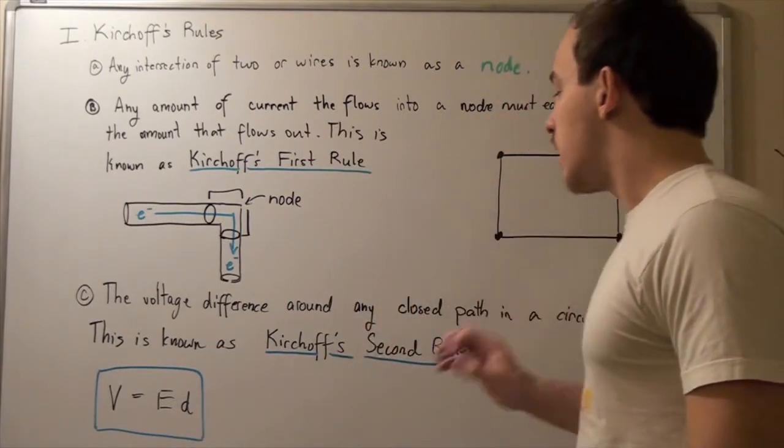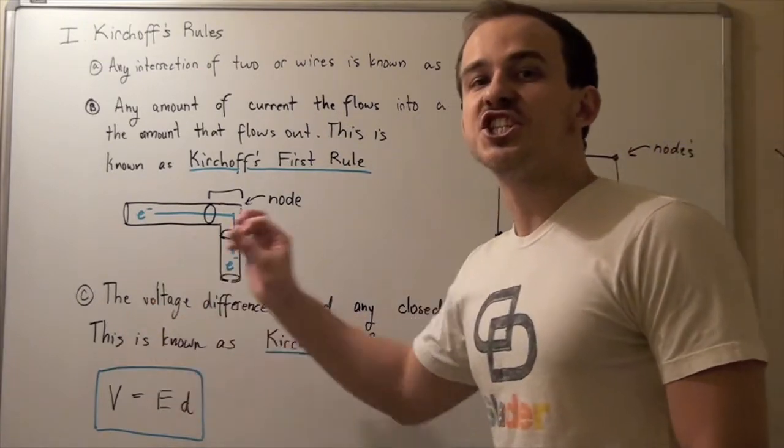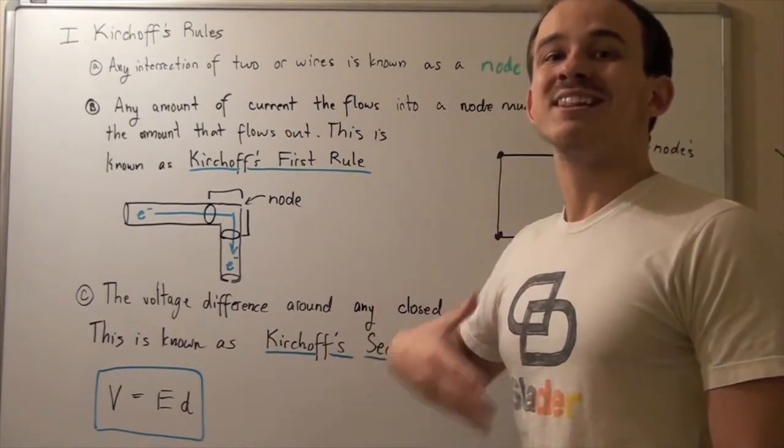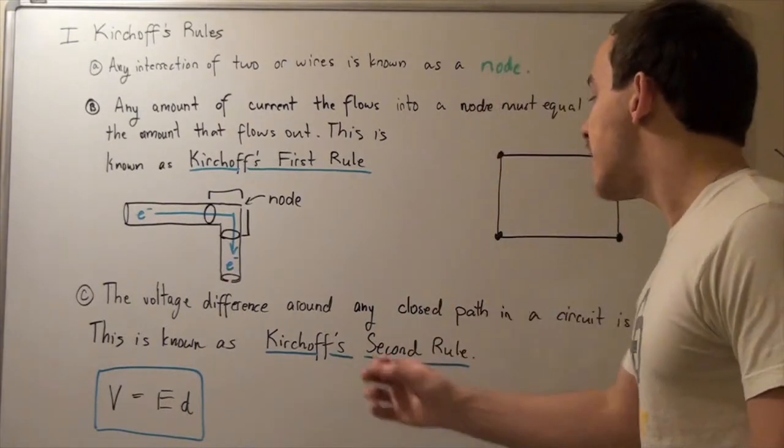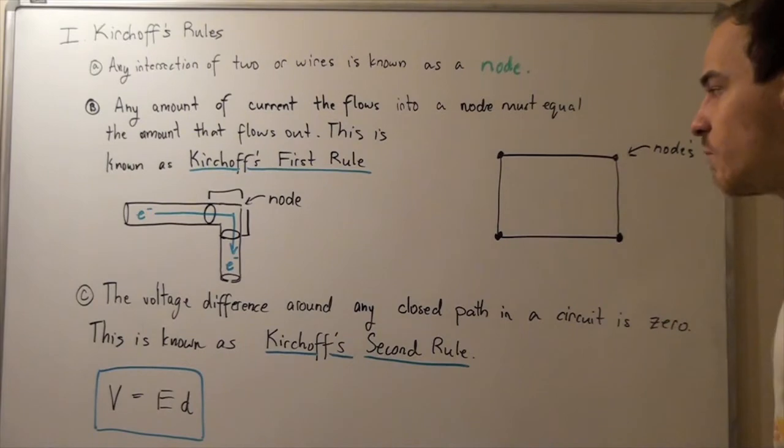Kirchhoff's second rule tells us the following. The voltage difference or the potential of our electric field around any closed path in a circuit is zero.